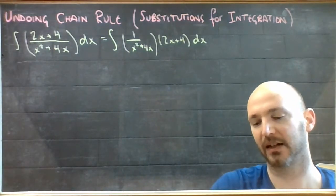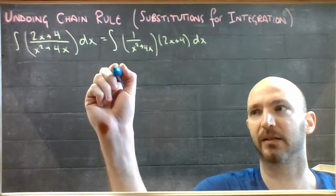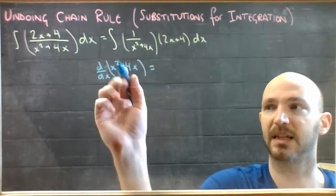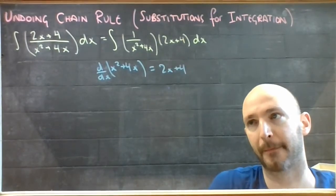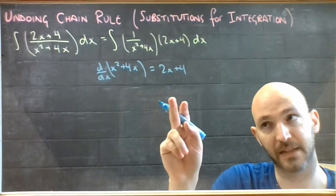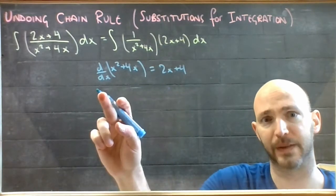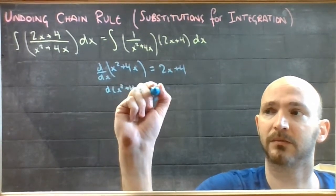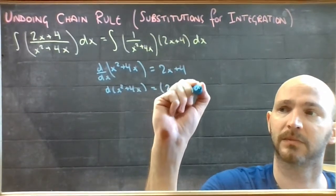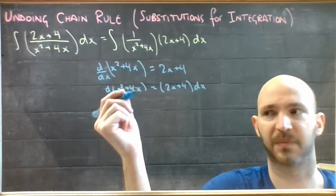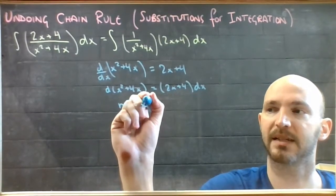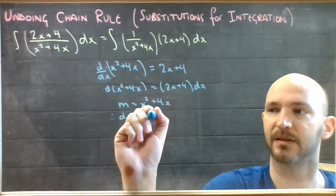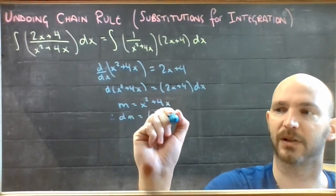Looking at my pieces, I notice that the derivative of x squared plus 4x happens to equal 2x plus 4. That's telling me this came from a chain rule. So I'm going to let m equal x squared plus 4x — replacing that expression with m — therefore dm is 2x plus 4 dx.